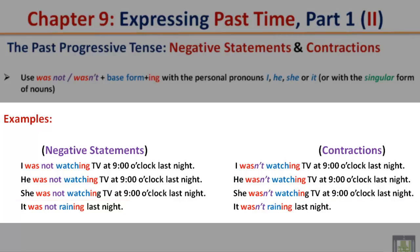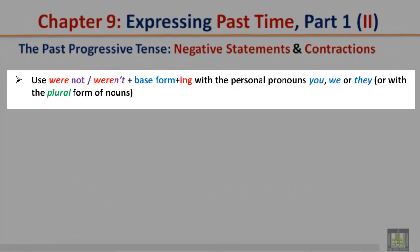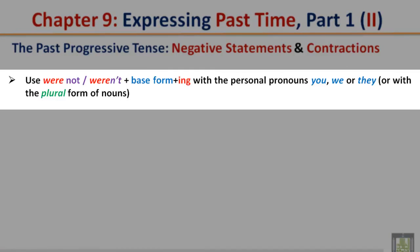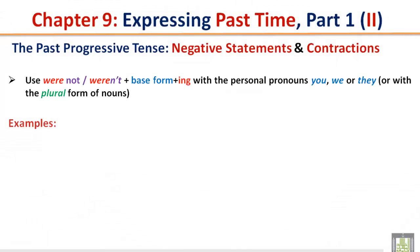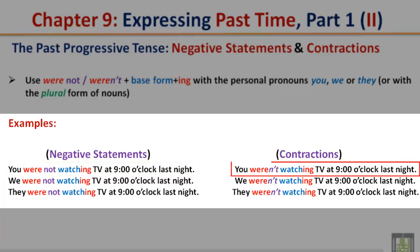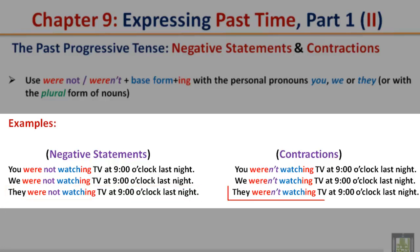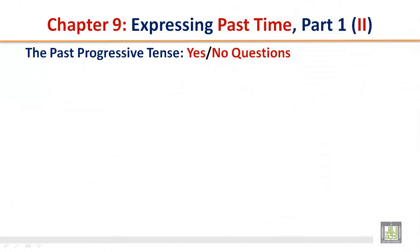It was not raining last night. It wasn't raining last night. Use 'were not' or 'weren't' plus the base form plus '-ing' with the personal pronouns you, we, or they, or with the plural form of nouns. You were not watching TV at 9 o'clock last night. You weren't watching TV at 9 o'clock last night. We were not watching TV at 9 o'clock last night. We weren't watching TV at 9 o'clock last night. They were not watching TV at 9 o'clock last night. They weren't watching TV at 9 o'clock last night.